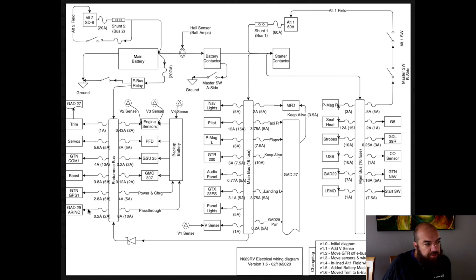You'll also notice that there is an additional backup battery. This is the IBBS that powers just these items: engine sensors, PFD, GSU 25, and the GMC 307. So if everything else goes dark, I still have a backup battery that'll give me about 45 minutes on these items, which arguably are all I need to land the airplane. Well, granted, I don't need any of this to land the airplane, but if you're in IMC, this gets you out of the clouds, hopefully.